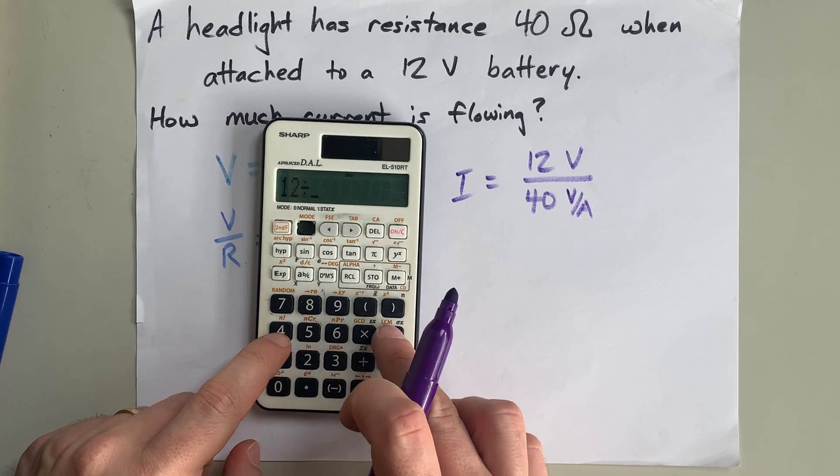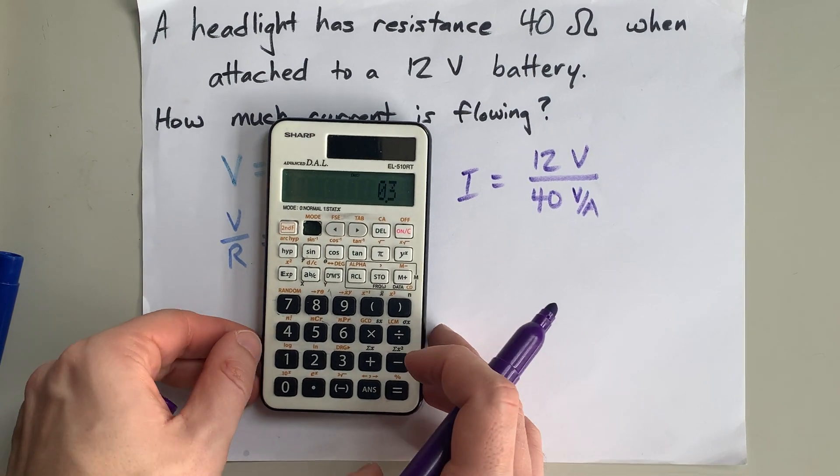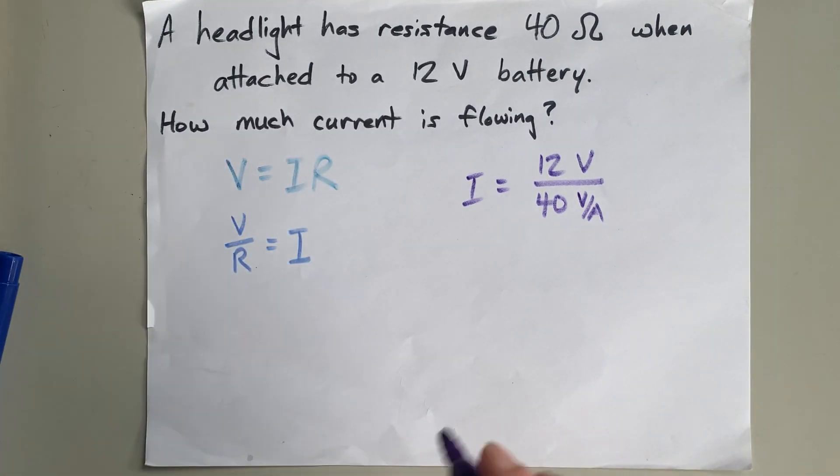When you do this on your calculator, 12 divided by 40 is 0.3.